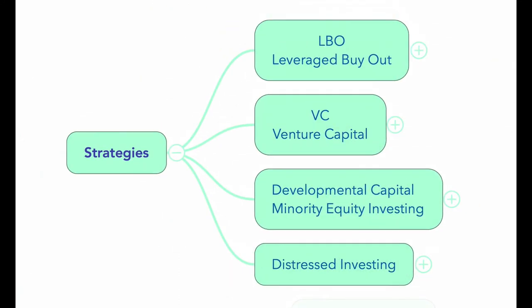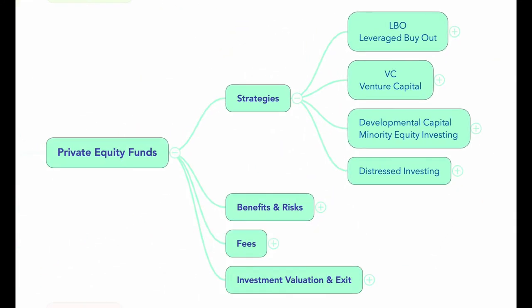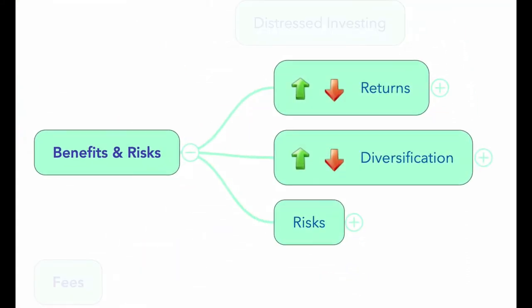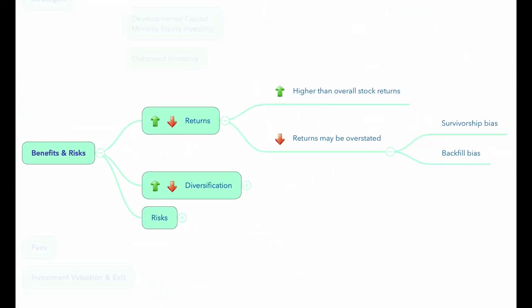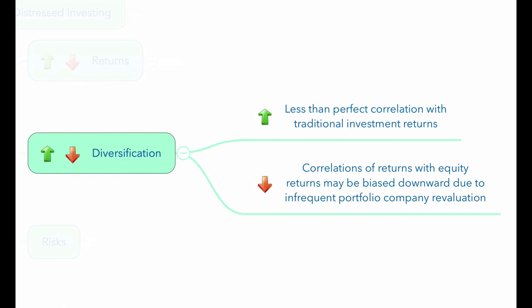Now let's look at the benefits and risks of private equity funds, covering returns, diversification benefits, and the risks of PE funds. There is evidence that over the last 20 years PE funds have had returns higher on average than overall stock returns. As with hedge fund returns, private equity returns data may suffer from survivorship and backfill bias, both of which lead to overstated returns. Private equity funds have less than perfect correlation with traditional investment returns, suggesting portfolio diversification benefits from including this alternative investment type.